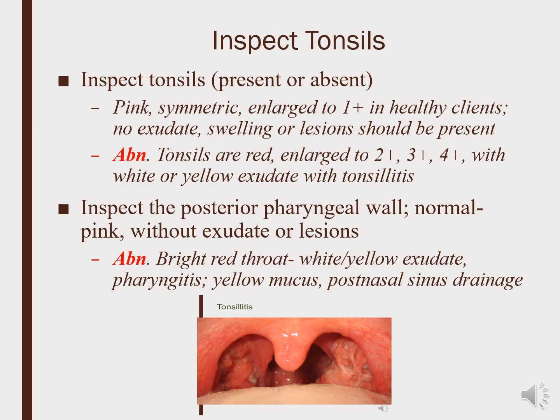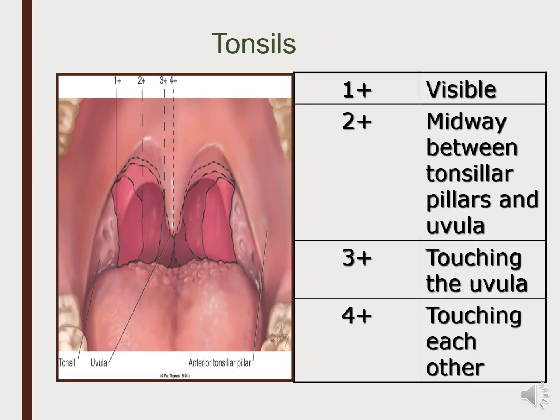When we look at the tonsils, whether present or absent, we are looking for them to be pink and symmetric. A 1+ grading on either side of the oropharynx is expected. As they become enlarged, they are graded 2+, 3+, and 4+, growing toward the center. When the tonsils begin to touch the uvula, they are 3+. When they touch each other, they are 4+. We inspect the pharyngeal wall and assess for enlarged tonsils, exudate, or lesions.